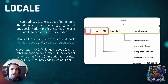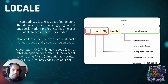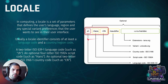Usually a locale identifier consists of a language code — which we can see on the left, in this case Chinese — next we have the country or region code on the right, which in this case is mainland China, CN. We can also have an optional script code, in this case Hans script, which we can see in the middle. The complete locale would be zh-Hans-CN, which identifies Chinese from mainland China with the Hans script.